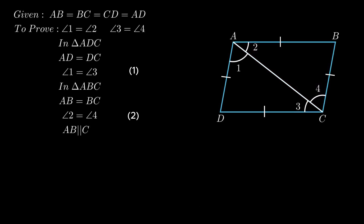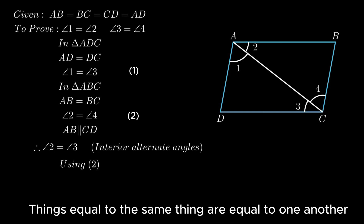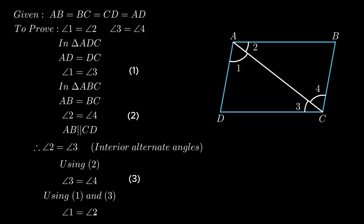Since side AB is parallel to side CD, as opposite sides of a rhombus are parallel, angle 2 equals angle 3 as interior alternate angles are equal. Using equation 2, angle 2 equals angle 4, therefore by the axiom that things equal to the same thing are equal to one another, we conclude angle 3 equals angle 4, hence diagonal AC bisects angle C. Similarly, using equations 1 and 3, angle 1 equals angle 2, hence diagonal AC bisects angle A.